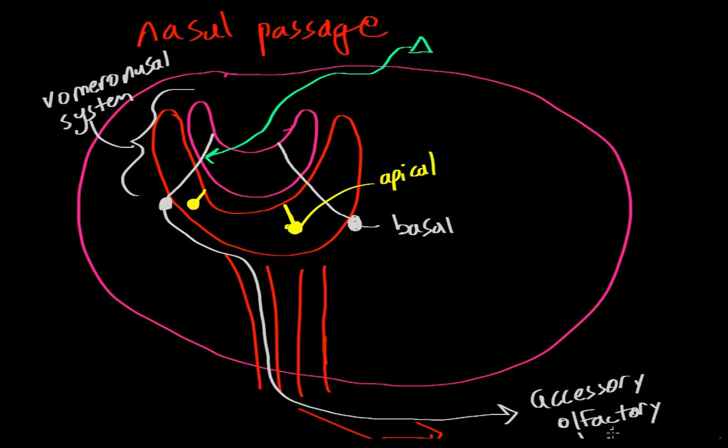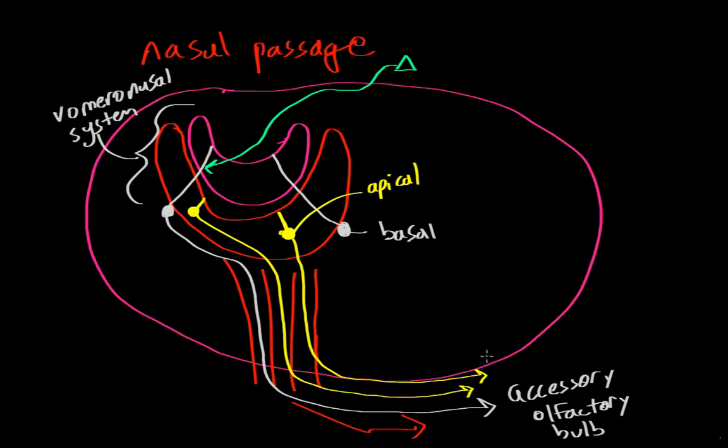And then from there, it will synapse onto a glomerulus, and then to a mitral or tufted cell, and then that mitral tufted cell will send an axon to the brain. So there are many of these vomeronasal systems throughout the accessory olfactory bulb. Here I just drew one. But basically, again, what we have is we have specialized cells that are responsive to one particular type of molecule that will send little axons that eventually go to the accessory olfactory bulb. All the axons will synapse into one particular location known as a glomerulus.